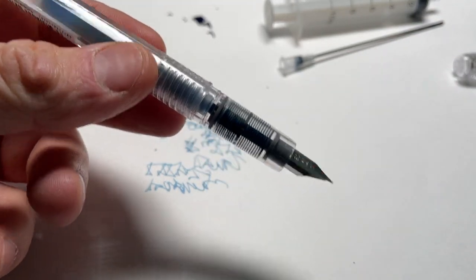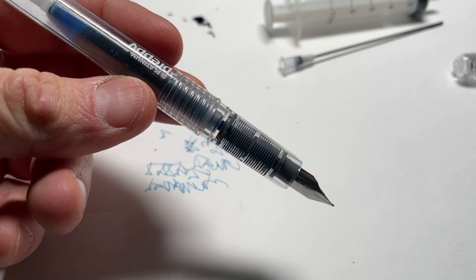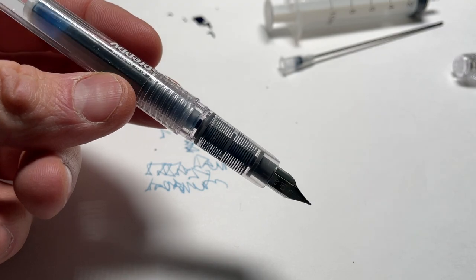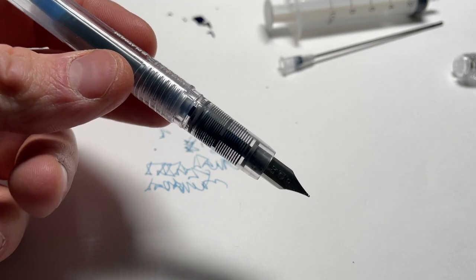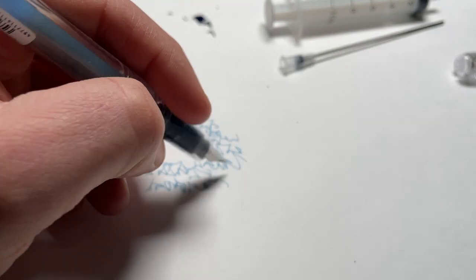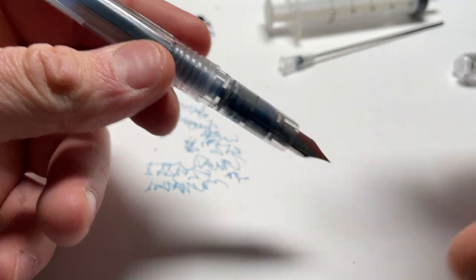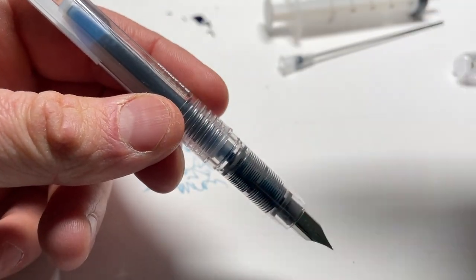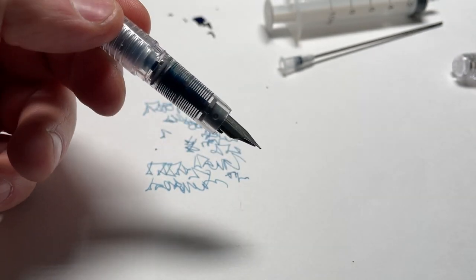So now we've fully rebooted that Platinum Preppy and taken it from a totally dry, unusable status to being basically like a new pen with a non-platinum ink color in that cartridge. You can repeat this process as many times as you want. If you don't let it dry out and your cartridge is empty, you can just pull the cartridge, fill it, and put it back on.